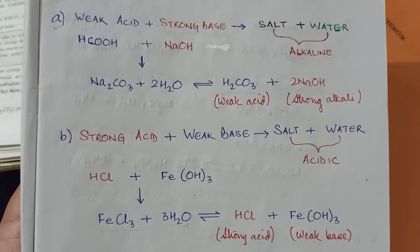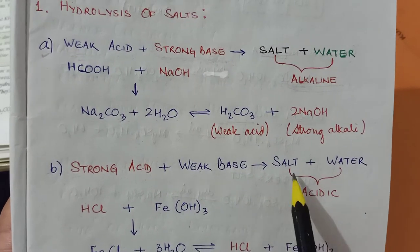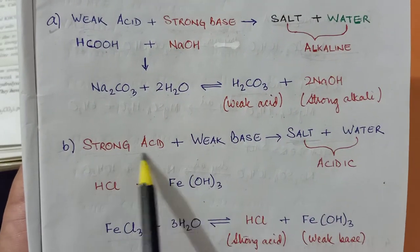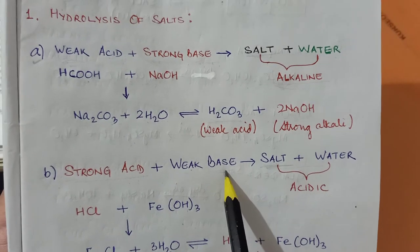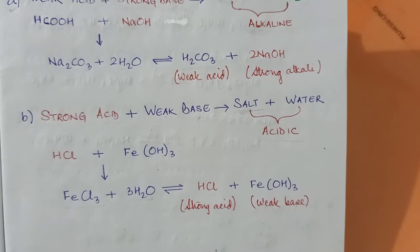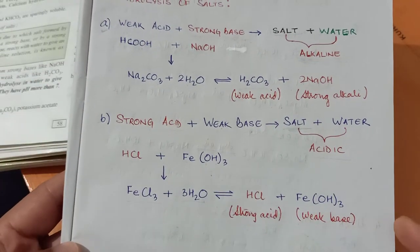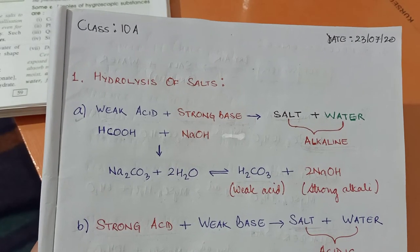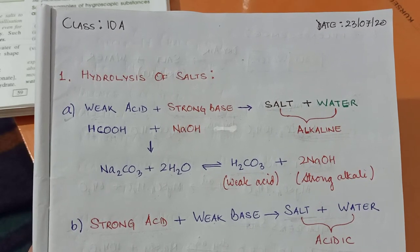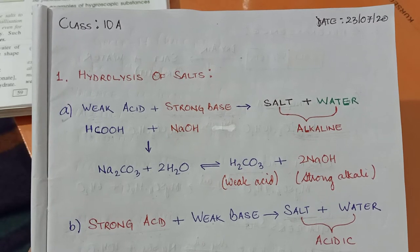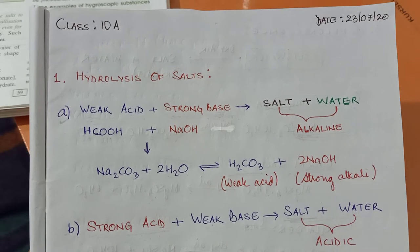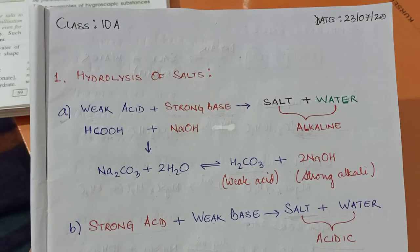This phenomenon — by which the salt produced by the action of weak acid on strong base, or strong acid on weak base, reacts with water to produce either alkaline or acidic solution — is known as hydrolysis of salt. Note that if the strength of acid and base are the same, hydrolysis will not take place. If you react strong acid with strong base, or weak acid with weak base, hydrolysis will not occur. The strength must be different.